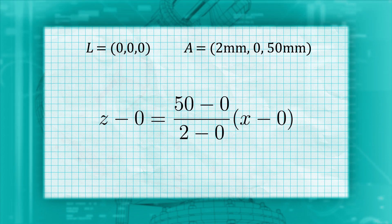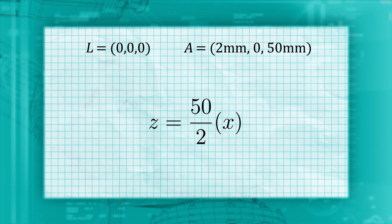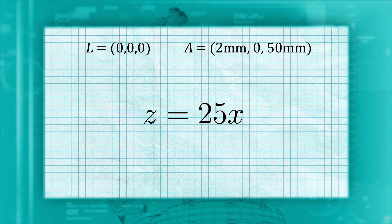We also know that point 1 is the left camera center and is at zero, zero. We can simplify and substituting in our values, we see that we get Z equals 25X.